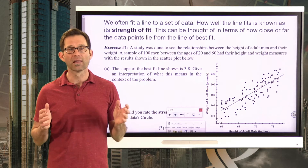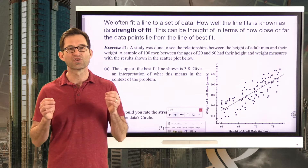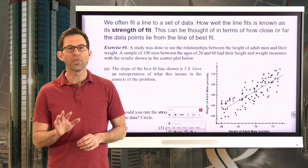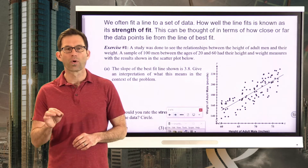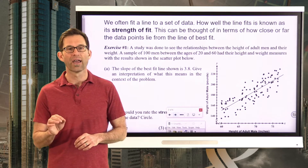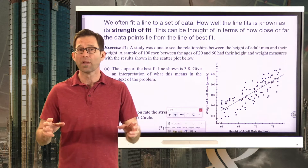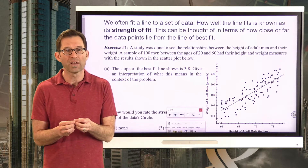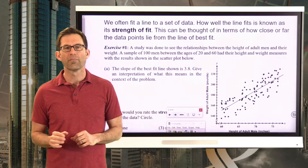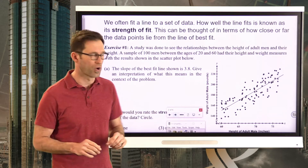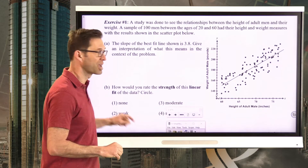We oftentimes fit a line to a set of data. How well the line fits is known as its strength of fit. This can really be thought of in terms of how close or far the data points lie from the line of best fit. If they lie really close to the line of best fit, it's very strong. And if they're way away from the line of best fit, then it's weaker.